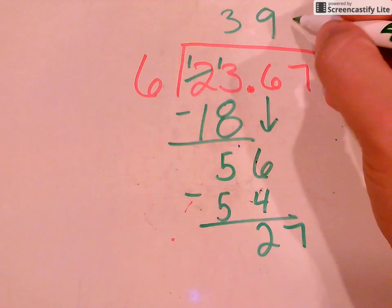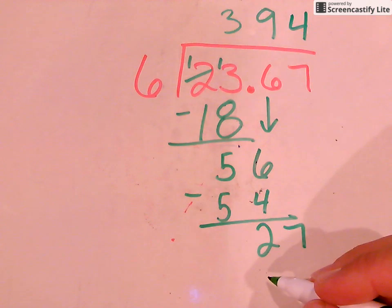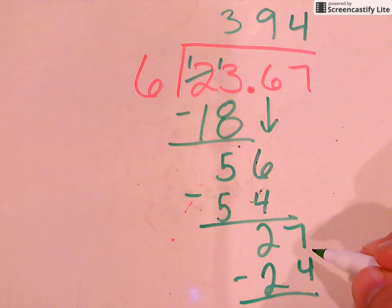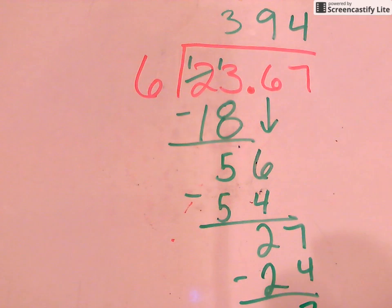6 will go into 27 four times. 6 times 4 is 24. And if I do 7 minus 4, that gives me 3.